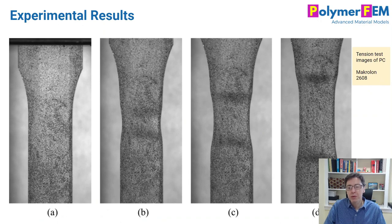Here's an image from their paper, this is Macrolon 2608. Figure A here is an undeformed state and they have a speckle pattern on this to do DIC digital image correlation. You can clearly see the neck formation and the neck propagating through the gauge section.